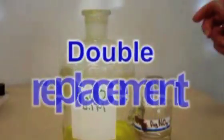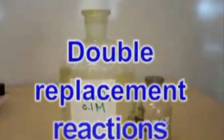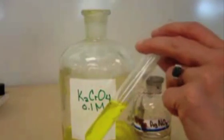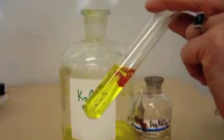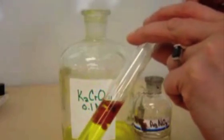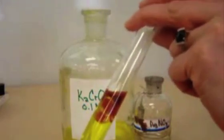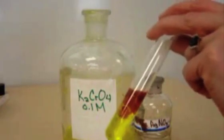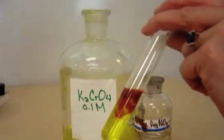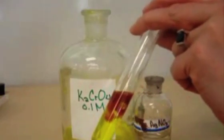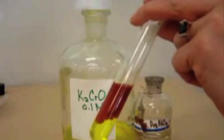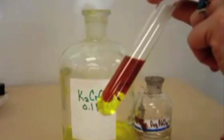We're going to do a double replacement reaction with potassium chromate and silver nitrate. Here's my potassium chromate. And I see that when I add silver nitrate to it. I am forming a nice red precipitate. And the precipitate is silver chromate. It's a double replacement reaction.